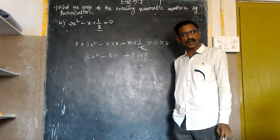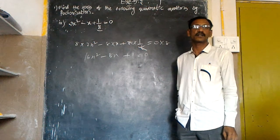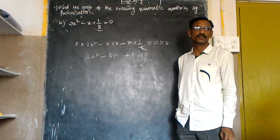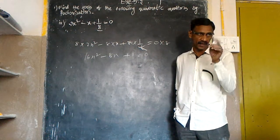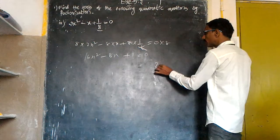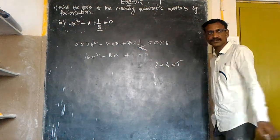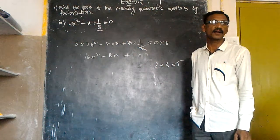Sir, why are we multiplying with 8? Is there any change in the equation or not? There is no change in the equation. I will give the best example. 2 plus 3 is equal to 5.